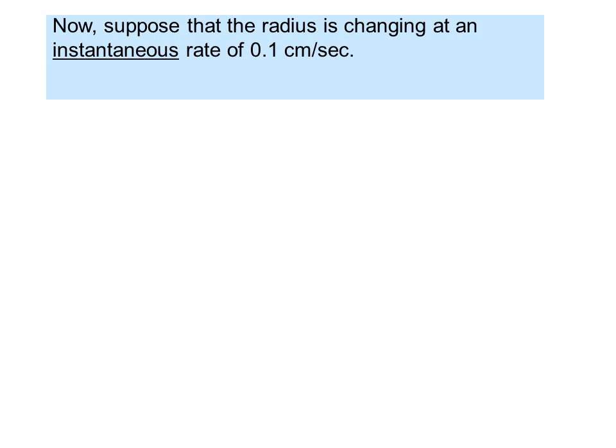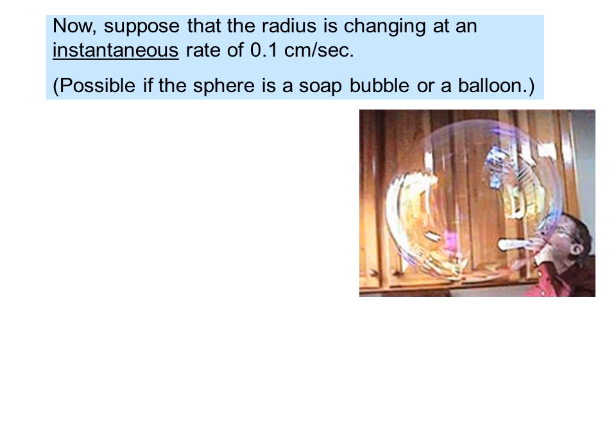Now suppose that the radius is changing at an instantaneous rate of 0.1 centimeters per second. This is possible if the sphere is a soap bubble or a balloon. Once again, we start with V equals 4 thirds pi r cubed.